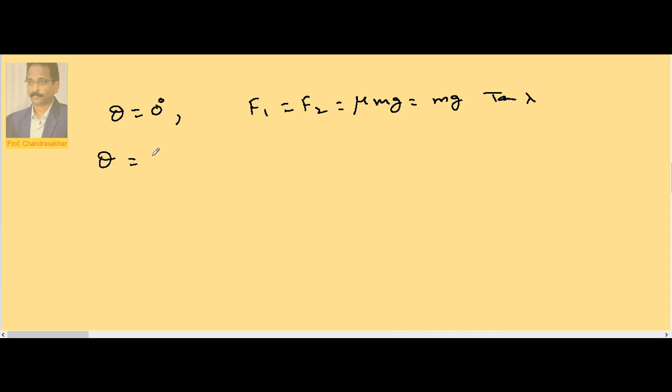When theta is equal to lambda, force is minimum, which is equal to Mg sin lambda, or mu Mg by root of mu square plus 1.